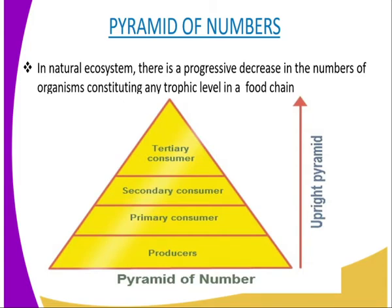Now let us look at how to construct the pyramid of numbers. The first step is that you use data collected or provided. The second step: from the data, identify and draw the most suitable food chain. The third step: indicate the numbers at each trophic level in the food chain. The fourth step: choose a suitable scale for the data. The fifth step: using the chosen scale, draw a horizontal rectangular bar to represent the number of producers at the base of the pyramid. The sixth step: progressively draw horizontal bars of other trophic levels in their ascending order, ensuring that the width of the bars is uniform.